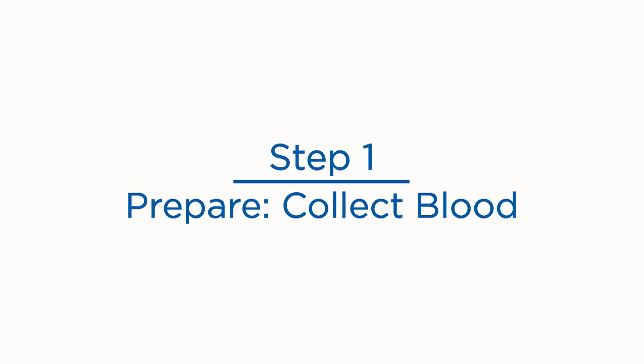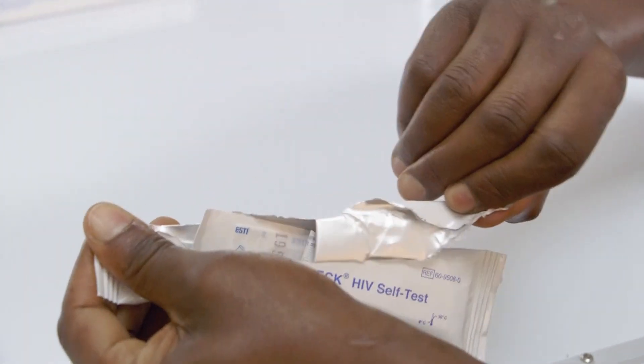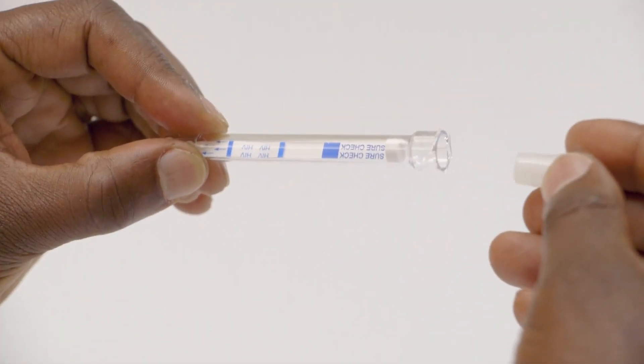In step one, we will collect blood. Tear open the foil pouch. Carefully remove buffer cap. Insert buffer cap into the test stand.